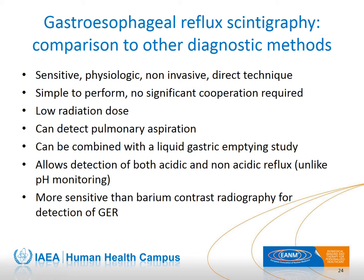Gastroesophageal reflux scintigraphy has distinct advantages: it is a highly sensitive, non-invasive, physiologic, and direct technique. The child is fed with his regular meal and regular meal volume; no external manipulations are required. Unlike barium upper GI series — which uses non-physiologic barium that many children refuse — milk scans are easy to perform, do not require significant cooperation, and have a low radiation burden. They are more sensitive than upper GI series in detecting aspiration, can detect both acidic and non-acidic reflux episodes, can demonstrate pulmonary aspiration, and can be combined with liquid gastric emptying scintigraphy, allowing evaluation of reflux, aspiration, and gastric emptying in one single study.